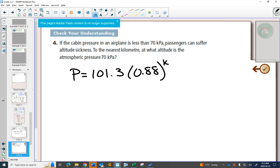This one has to do with atmospheric pressure. This is the formula for atmospheric pressure, and they would tell you that P is the pressure, and K is the number of kilometers above sea level. So if the cabin pressure in an airplane is less than 70 kilopascals, passengers can suffer from altitude sickness. Altitude sickness is what you feel when you go so high up that the air is thinner and your body is not getting enough oxygen.